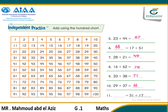Another question: 31 plus 17. So we will start from 31. Where is 31 on the 100 chart? That's 31. Plus 17. What's the number in the tens digit? It's 1. So we will go to 41. Plus 7. So count 7 steps: 1, 2, 3, 4, 5, 6, and 7. So our sum is 48.